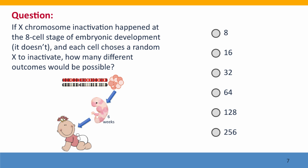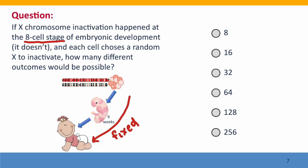So this is asking: if X inactivation were to happen at the 8-cell stage, when there were only 8 cells present, and if each cell randomly chose the maternal X or the paternal X to inactivate, and everything after that was absolutely fixed — no chance events or genetic variation events, everything after that was fixed — the only source of variation was which X got inactivated at the 8-cell stage. How many different outcomes would be possible?